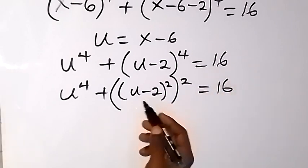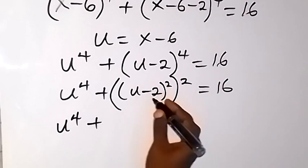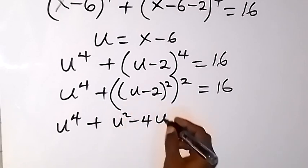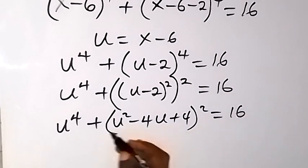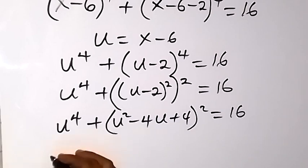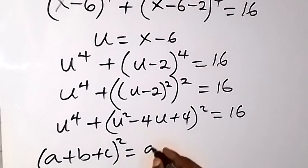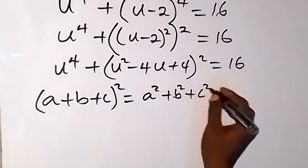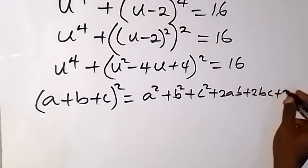We expand (u minus 2) squared first. We have u raised to power 4 plus (u squared minus 4u plus 4) squared, equals 16. What we have inside that bracket resembles something like (a plus b plus c) squared, which is the same as a squared plus b squared plus c squared plus 2ab plus 2bc plus 2ac.